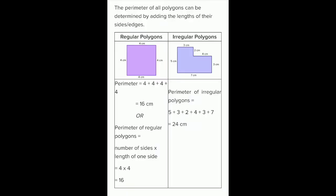The perimeter of all polygons can be determined by adding the lengths of their sides and edges. There are two types of polygons: regular polygon and irregular polygon. As you can see in the image, a regular polygon has all sides equal, while an irregular polygon has different sides. The perimeter of a regular polygon is the number of sides multiplied by the length of one side.